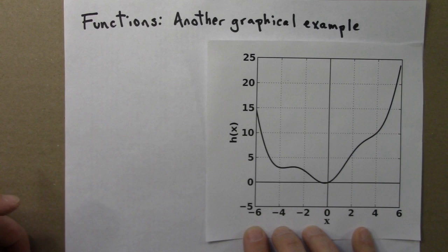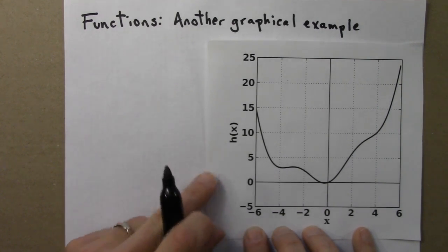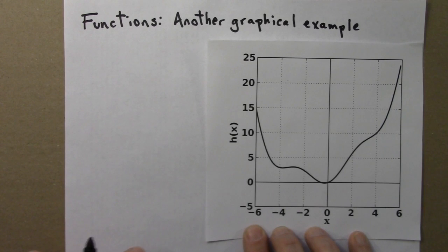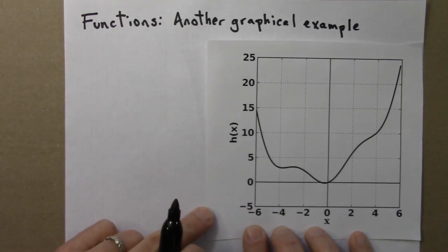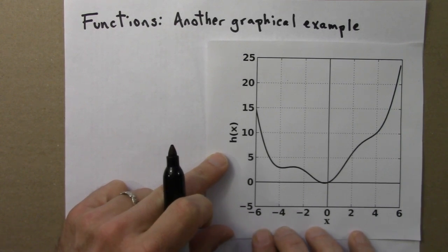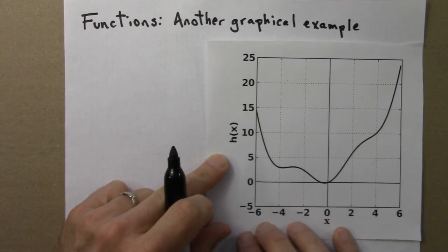Let's do another graphical example. Here's a function. Here's the graph. And for variety, I've called this h(x) instead of f or g. And we don't have a formula. And we don't have a verbal description of this function. So in order to figure out input and output values, we'll have to use the graph. Let's see how that would go.